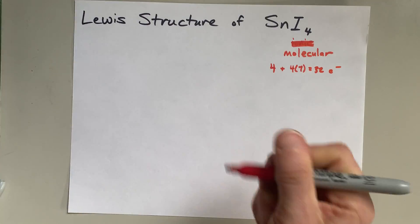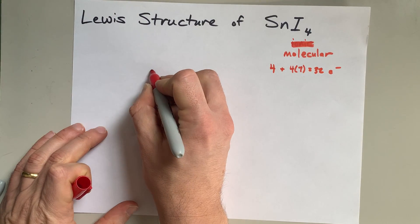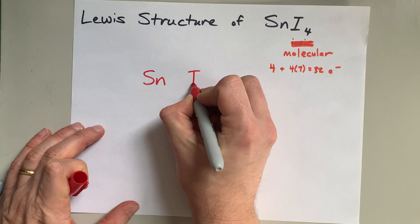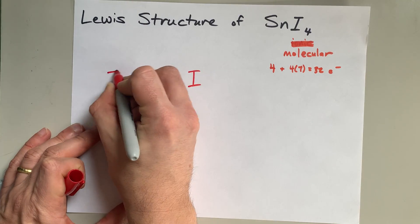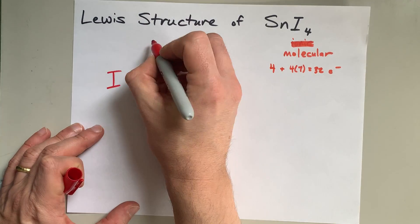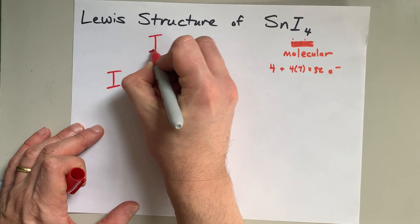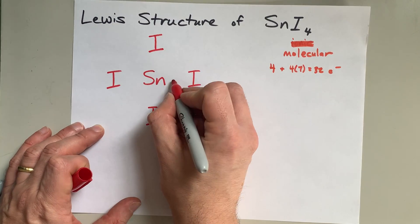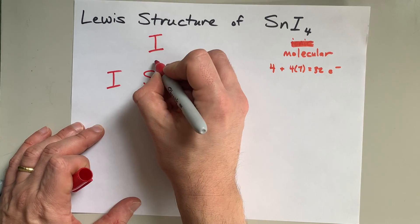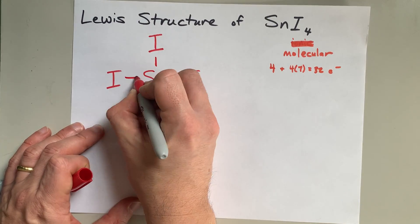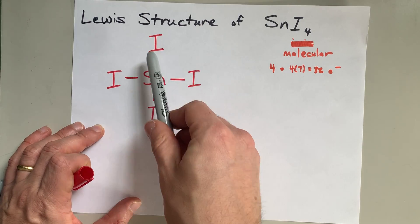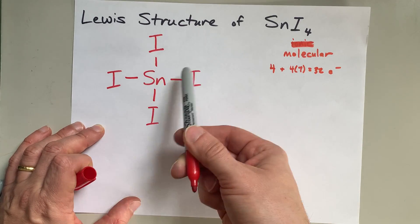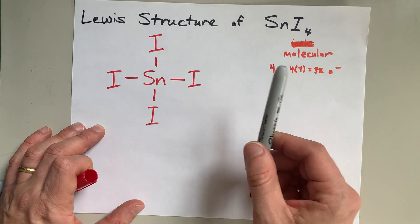What I'm going to do is put my Sn in the center and surround it by the four iodines. The way that I deal with electrons is to first create a single bond between my central atom and the outer atoms. That's 2, 4, 6, 8 electrons that I've already dealt with.